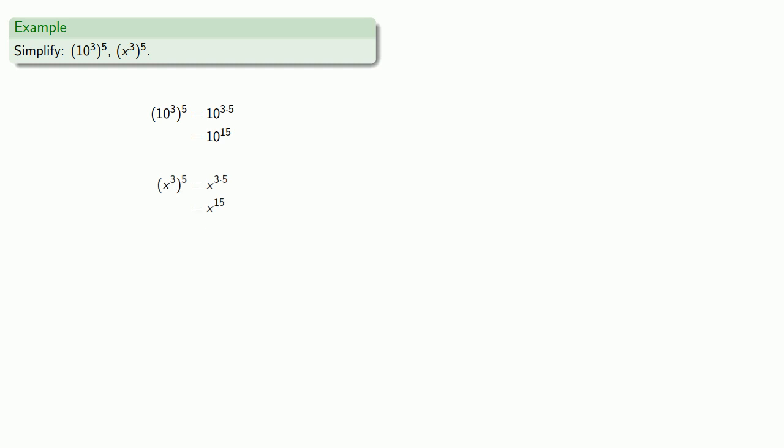And likewise, x to the third to the fifth is going to be x to the 3 times 5, x to the power 15. Again, nothing really changes if we use variables instead of whole numbers.